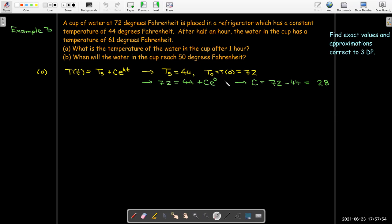Notice that this constant C will always be the initial difference in the temperature, the temperature of the object initially minus the surrounding temperature.